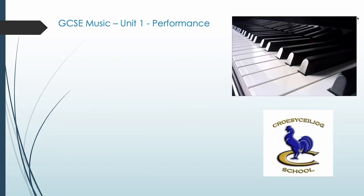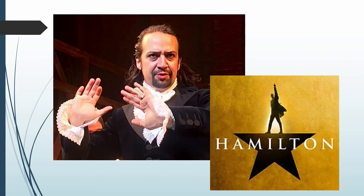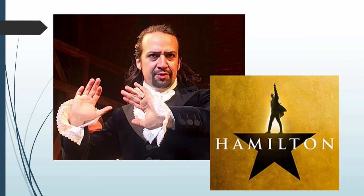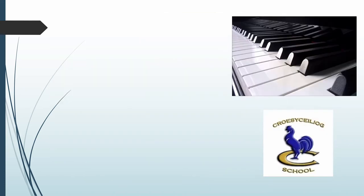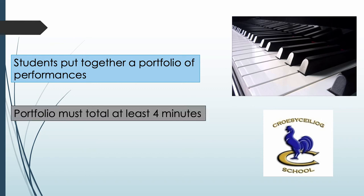Unit 1 is the performance element and is the unit that involves the most amount of independent learning. Hopefully by the time you start this September you will have already gained some skills on an instrument, whether that's singing in the car or piano lessons after school. Any instrument is allowed in this unit and you can perform in any style, so it doesn't matter whether you like to perform Beethoven piano sonatas or blast out some Hamilton songs. The unit involves students putting together a portfolio of pieces of your own choice that have to total at least 4 minutes.